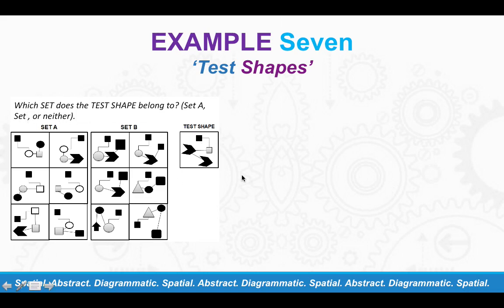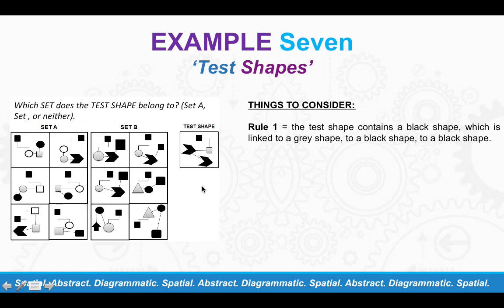Here we've got the test shape. So you've either got to see if it fits with set A or set B, or it might not even fit in with either of them. So let's have a look and break this test shape down. So here we start with a black shape, and it's joined to a grey shape, to a black shape, and to another black shape.